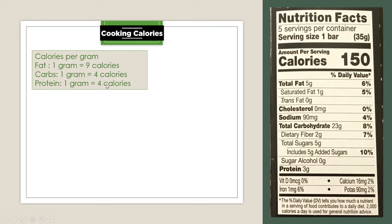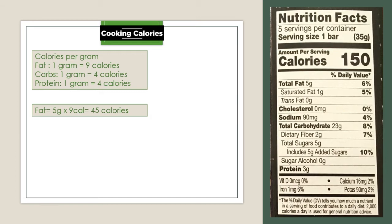Now let us start calculating. We will start with fat. As you can see here, the total fat is 5 grams, so that is what we are going to multiply with 9 calories. 5 times 9 equals 45 calories.